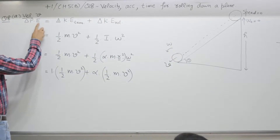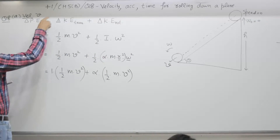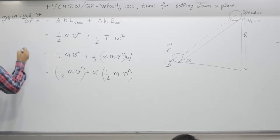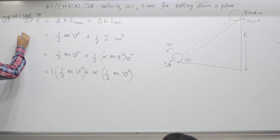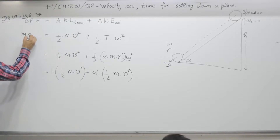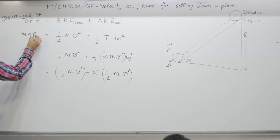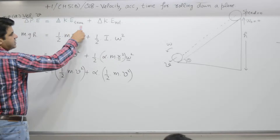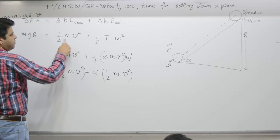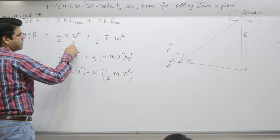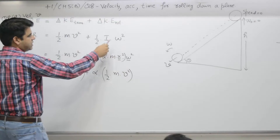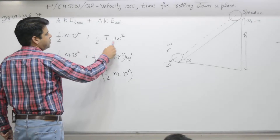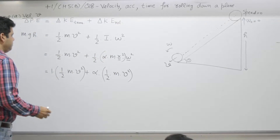Change in potential energy: as the particle moves down, potential energy decreases by mgh. Kinetic energy increases by (1/2)mv², and rotational kinetic energy also increases by (1/2)Iω².